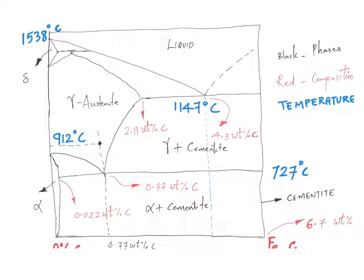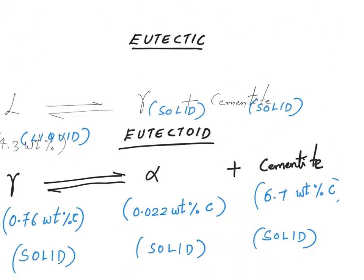At this particular point, if I cool my alloy, at this particular time it is purely gamma austenite. Once it cools at this particular point, a eutectoid reaction will happen and a single solid phase will decompose into two other solid phases: alpha ferrite and cementite. This is the eutectoid reaction that we are referring to.